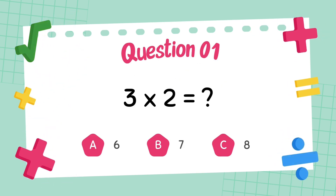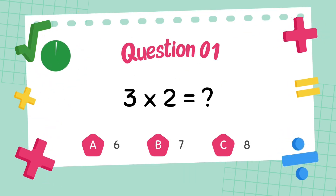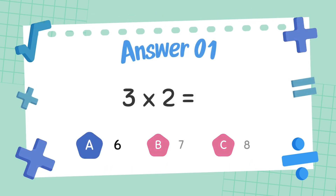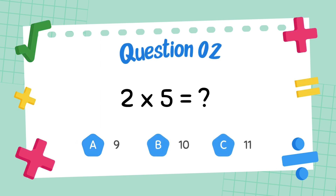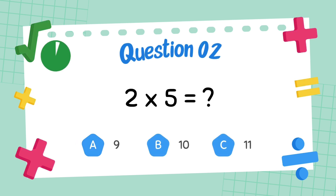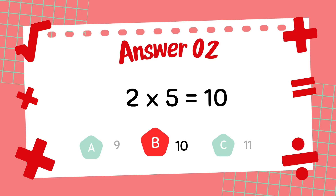What is 3 multiply 2? The answer is 6. What is 2 multiply 5? The answer is 10.